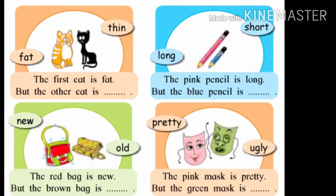Now come to the next picture. Two bags are given — one is new and one is old. Complete the sentence: The red bag is new but the brown bag is old. Lal bag hi navin ahe, tar tapkiri bag hi zuni ahe. New and old, both words are opposite to each other.